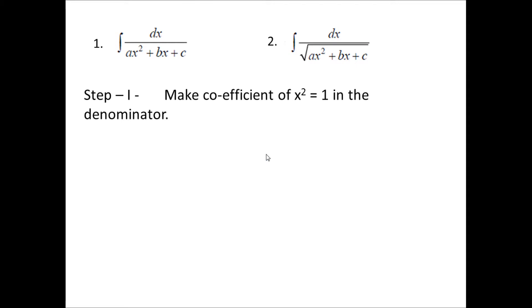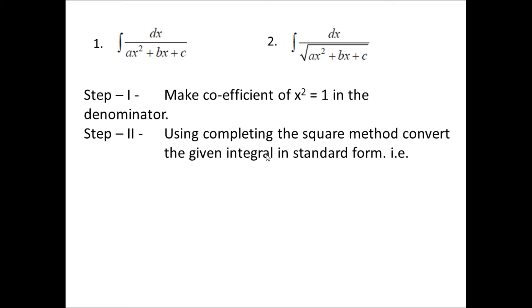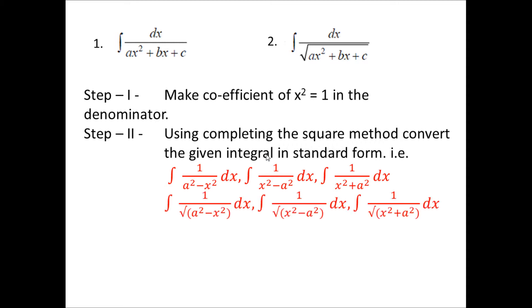Step number one is: make the coefficient of x squared equal to one in the denominator. We will take a common in the whole term and that factor can be written outside the integral sign. In case we have a square root, we will get 1 upon root a outside the integral sign. Step number two: once we have coefficient of x squared equal to one, we will use the completing the square method to convert the given form into a standard form — that is, one of the six formulas discussed earlier.